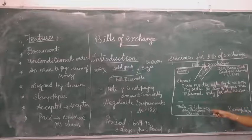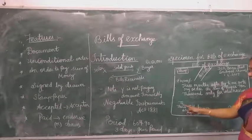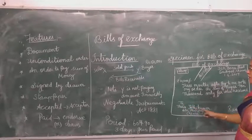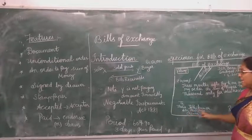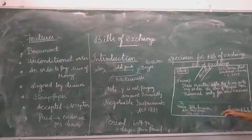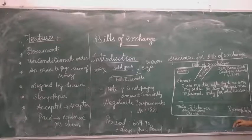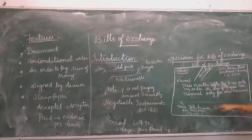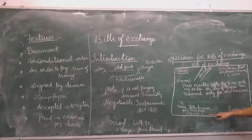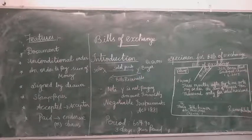It should be written on a stamped paper — it should be revenue stamped. Who is writing the bill? Jyothi Kumar. There are 3 parties involved. There is the drawer, the drawee, and the payee. In this bill of exchange, 3 parties are involved. Here we write the buyer's address and here the seller's address. The buyer's name is Ramesh.